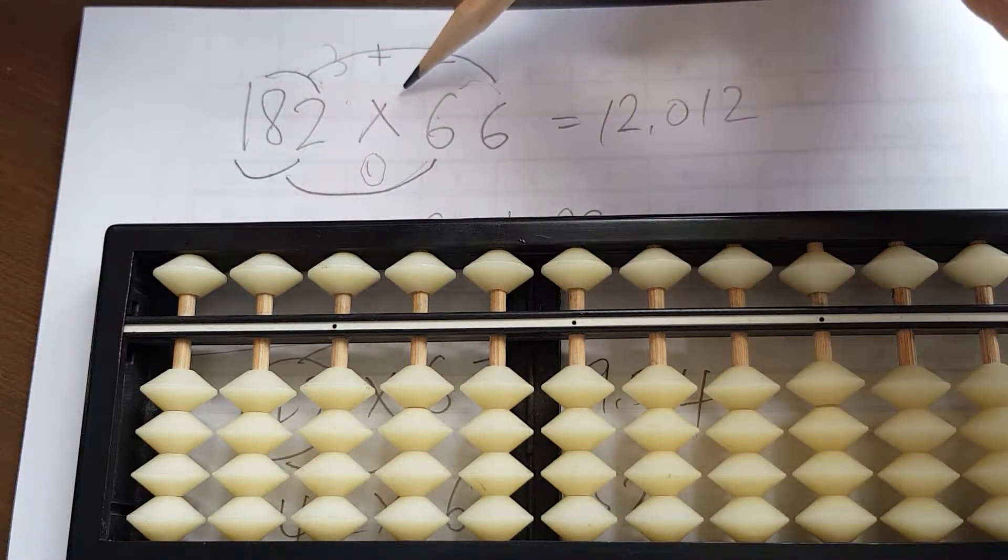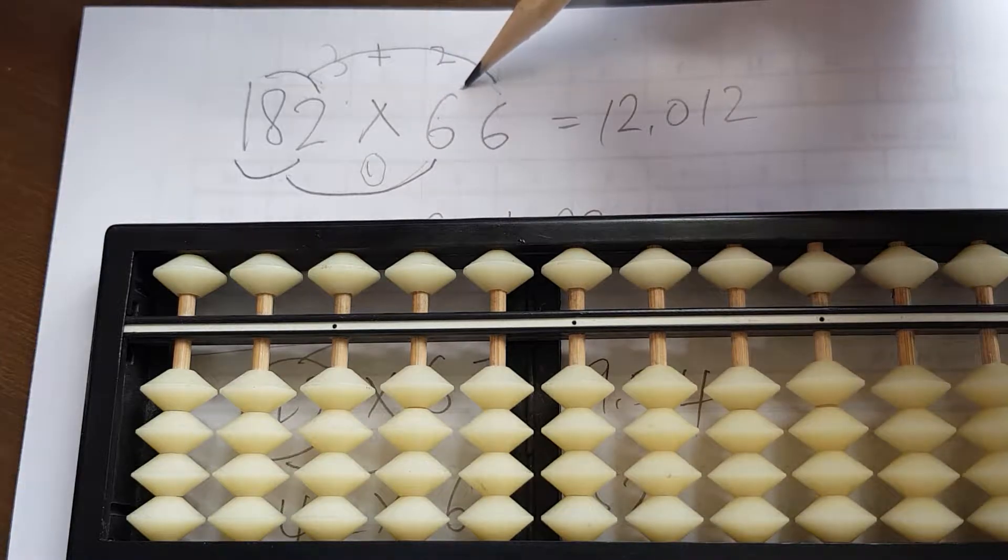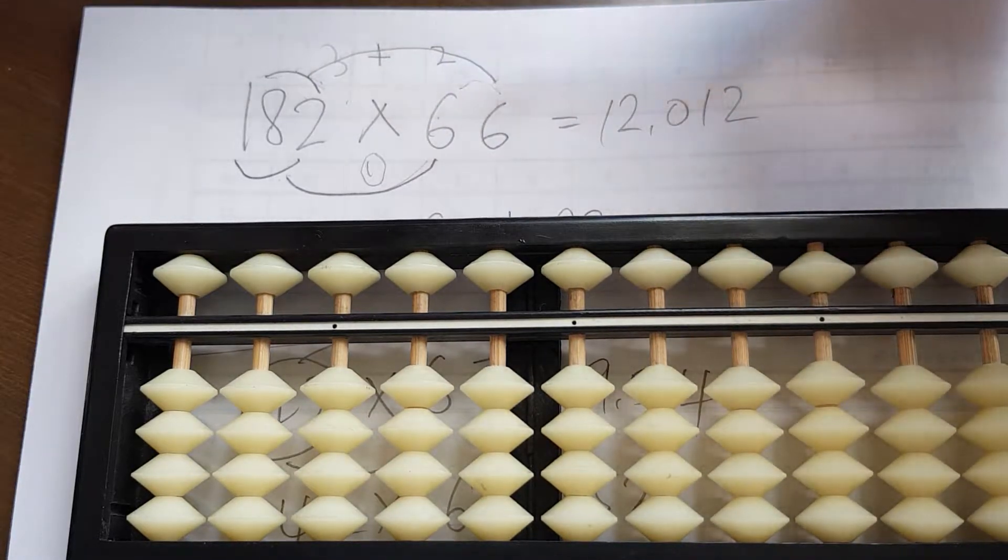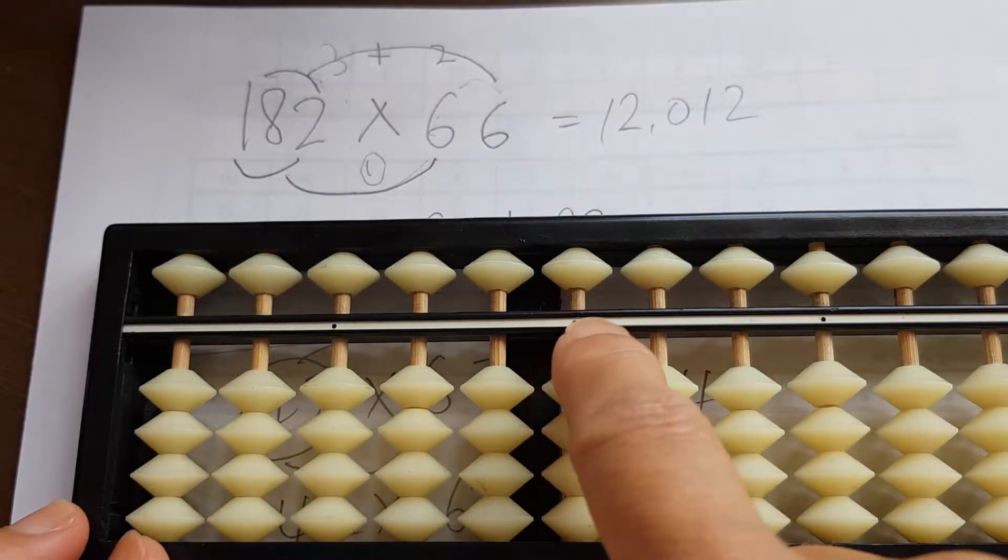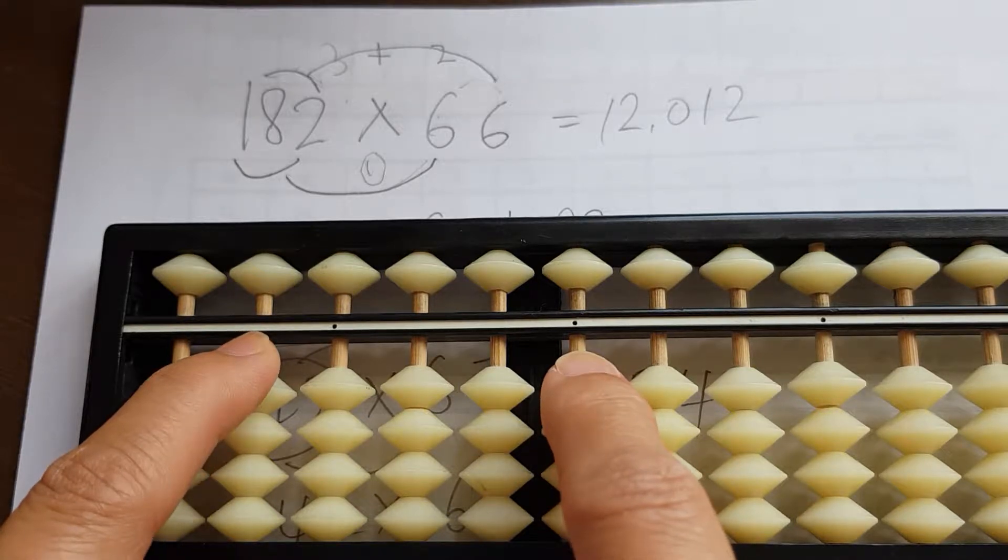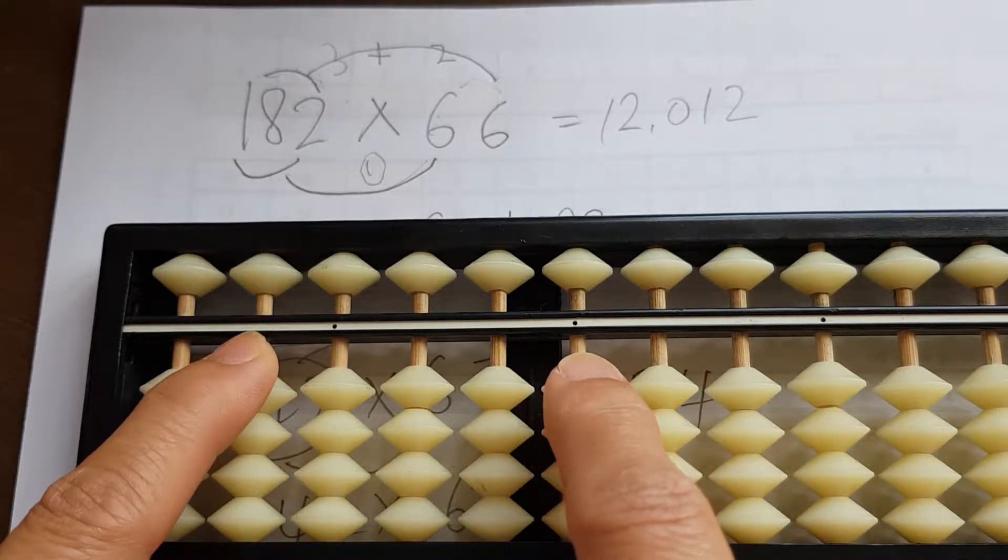Since it's a multiplication with three digits and two digits, we add up the digits—three plus two equals five. The answer is going to span across five columns, so we start from the unit and five columns we end up on the tens of thousands column.